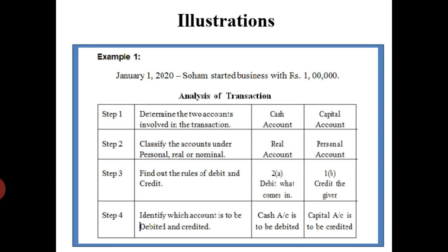Now here are a few illustrations of journal entry. First example: January 1st, 2020 — Soham started business with rupees 1 lakh. The analysis: Soham is the owner and proprietor of the company. As per the double entry system, when the proprietor starts the business we do not write the person's name in the books of account — we write the representative only. So capital is the representative of Soham. Step 2: cash comes under real account and capital comes under personal account.